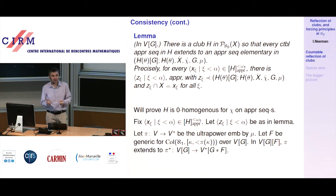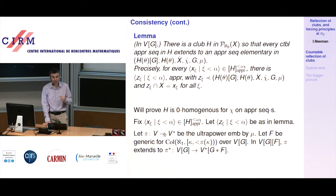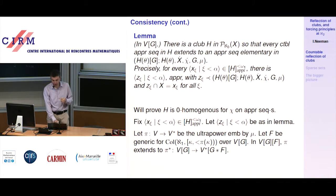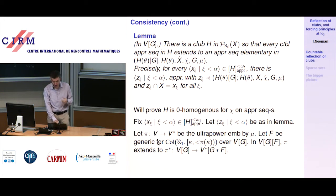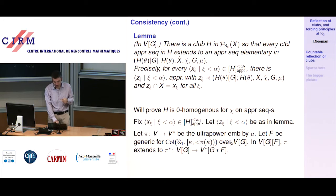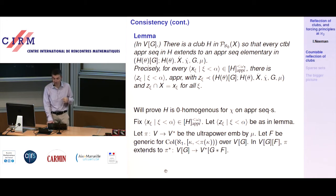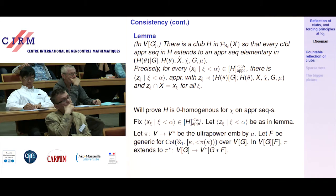To extend to the generic extension V[G], do a little more forcing. Let F be generic for the collapse of everything between kappa and the image of kappa over V[G] — everything between the critical point and its image. Then in the further extension V[G][F], pi extends to an elementary embedding pi* from V[G] to V*[G∘F]. This is completely standard. Take the pointwise image of X: U is the pointwise image of X. It has size aleph_1, belongs to V*[G∘F] with size aleph_1 there.